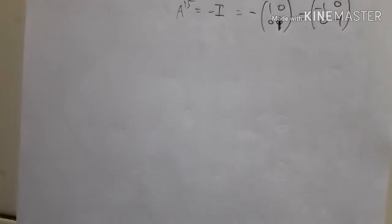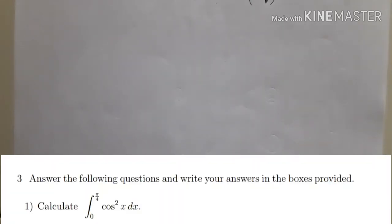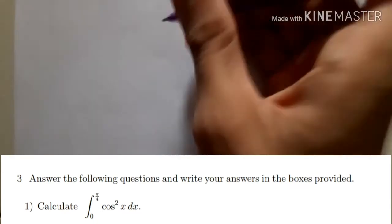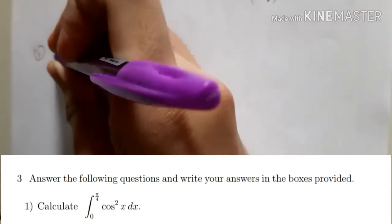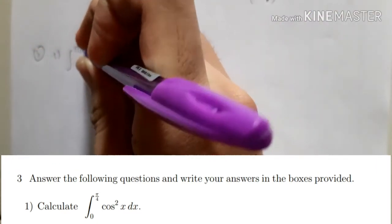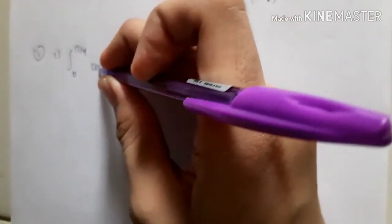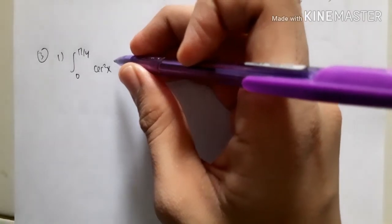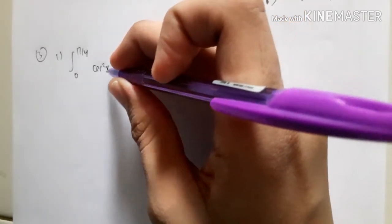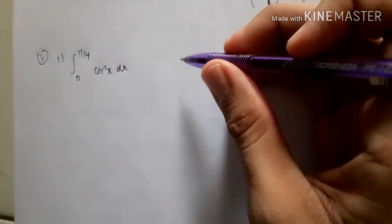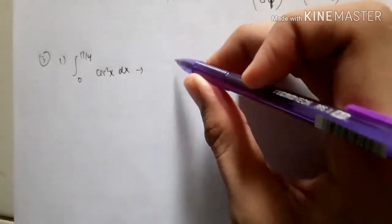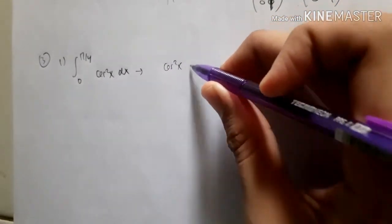Hello everyone, welcome to this Momkwa Gaku show — Cosen Mathematics Part Three, 2016. Let's look at the question. There are three questions on integration. Number one: calculate the integral with the limit from zero to π/4 of cosine squared x dx.